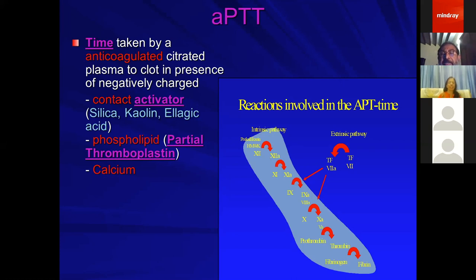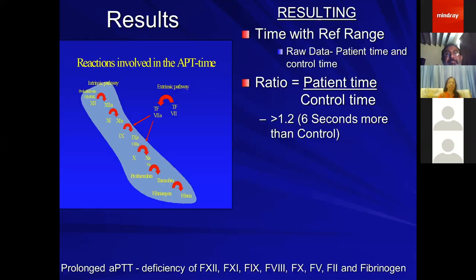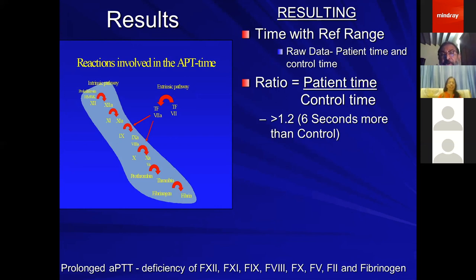The contact activator activates factor 12, and the intrinsic pathway proceeds to form the clot through thrombin. The normal way to report APTT is the patient's time along with the reference range. Some hematologists use the ratio — the patient's time divided by normal plasma time — and a ratio of more than 1.2, equivalent to 6 seconds more than control, indicates a prolonged APTT. A prolonged APTT can be due to deficiency of intrinsic pathway factors: factor 12, 11, 9, 8, 10, 5, and prothrombin.